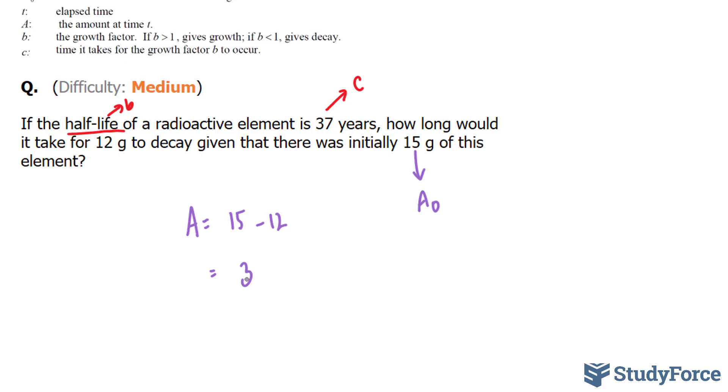Let's plug in all this information into our formula. 3, which represents our big A, is equal to our initial, 15, times 0.5, which represents our half-life of half, to the power of t over 37 years.